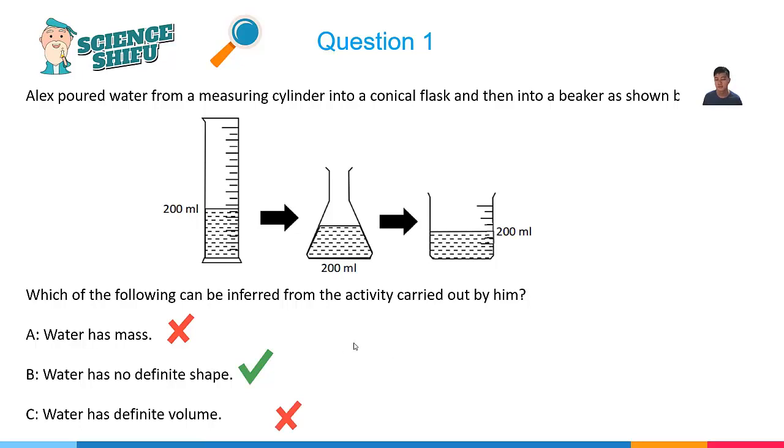Now you may be thinking, why is sentence A and C wrong? I thought we have learned this in the textbook that water has mass. Water has definite volume. Why is this not relevant here? To answer that question,